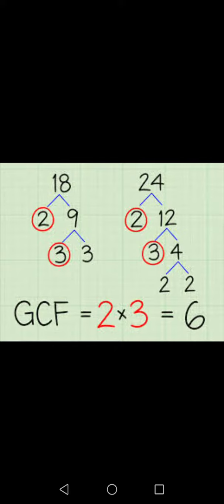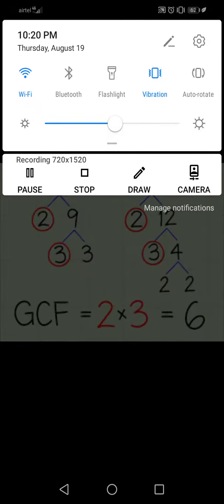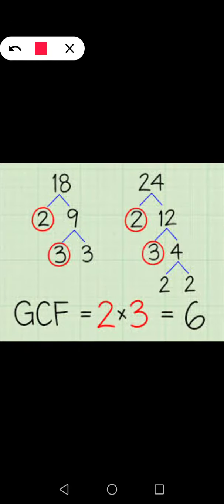First of all, we write all the factors of 18 and 24. We see 18 first. We write 18, and then what are the possible factors of 18? We see here 2 and 9 are factors of 18. Then 9 can be further factored into 3 and 3.